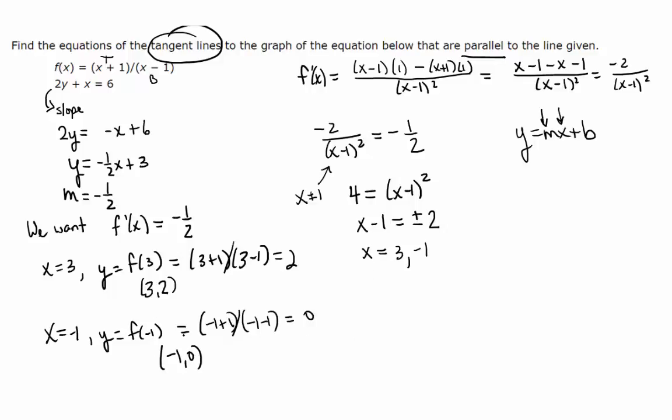So we have two tangent points, but at both of these points, the slope of the tangent line is what? Yeah, that's why we found them.